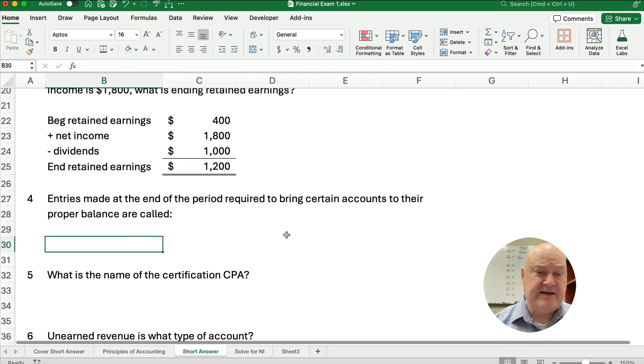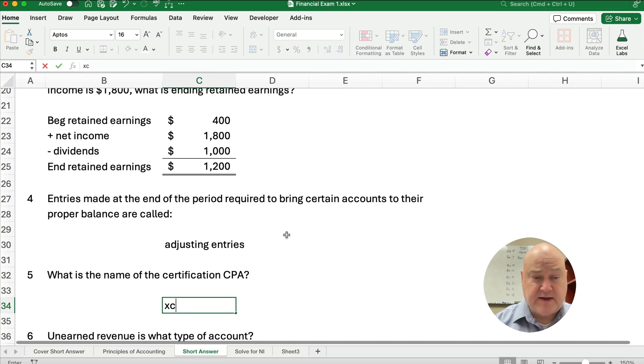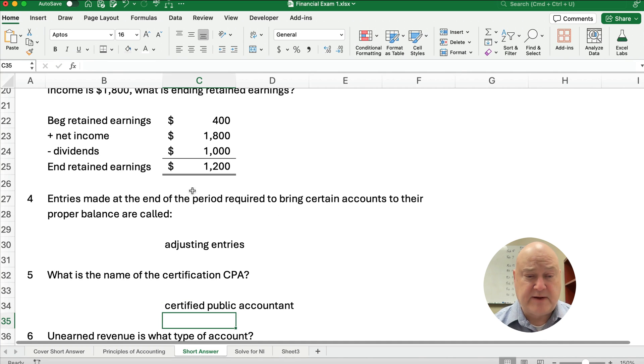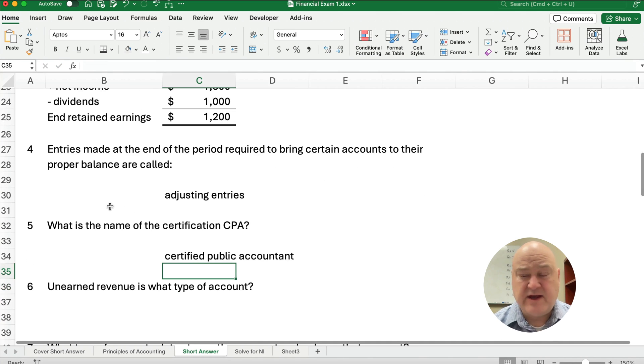Number four. The entries made at the end of the period required to bring certain accounts to their proper balance, these are by definition called adjusting entries. This is really a chapter three topic when we're adjusting the accounts, but that's what it's called. We make entries at the end of the period. What's the name of the certification CPA? Well, it stands for certified public accountant. So that's the answer. You need to know that. Your professor's feelings will be hurt if you don't know that CPA is certified public accountant.